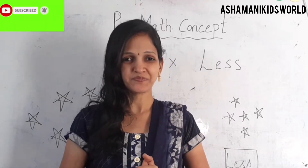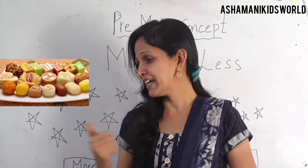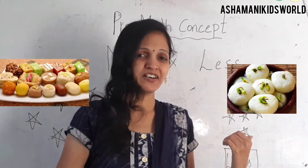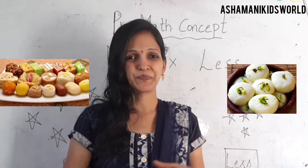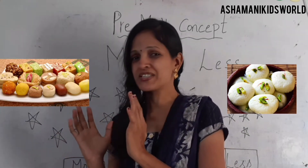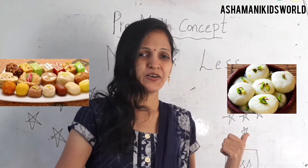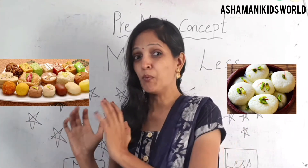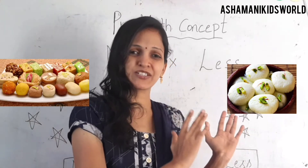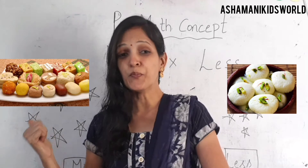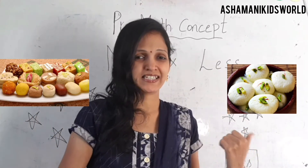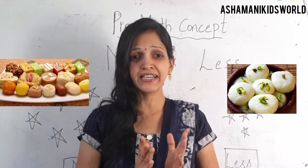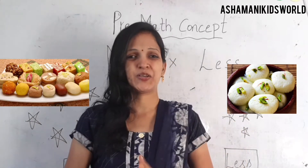Look here — we have a sweets box, and here we have one more sweet box. Here we are having more sweets, and here less. The quantity is more here, and less here. So this is more and this is less. Based on the quantity we are saying more and less.